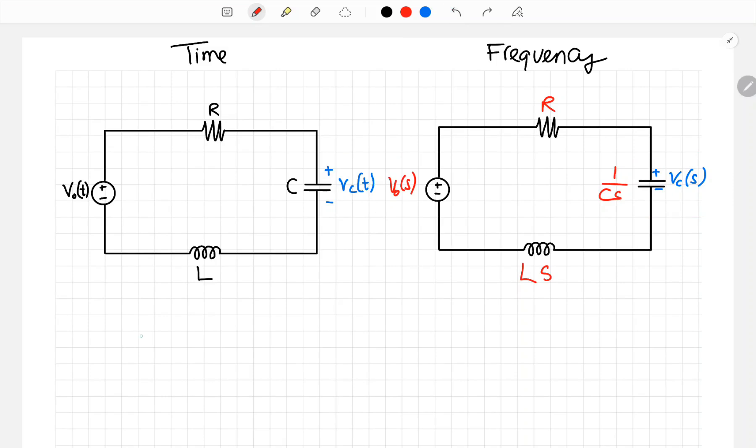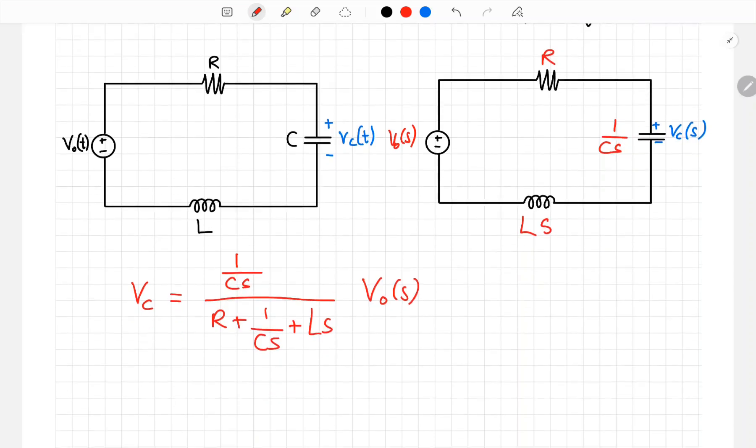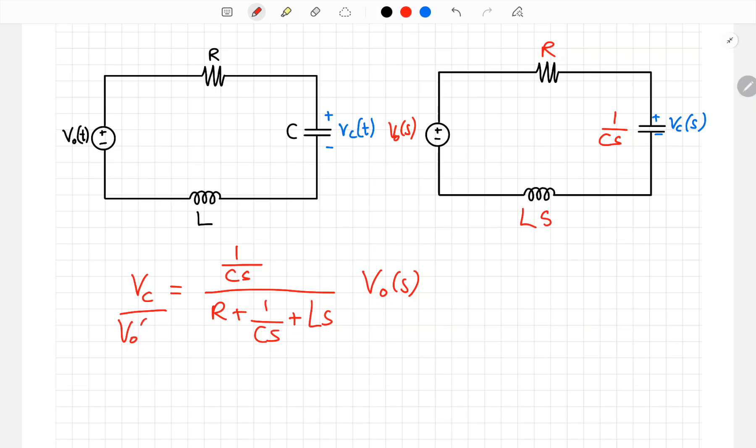From circuit, we apply voltage divider to calculate the voltage Vc. So Vc equals impedance of C which is 1 over C times S, over R plus 1 over C times S, plus L times S, everything times V0 of S. If we move V0 of S to the other side, we have Vc of S divided by V0 of S. The output divided by the input. This is the definition of transfer function G.